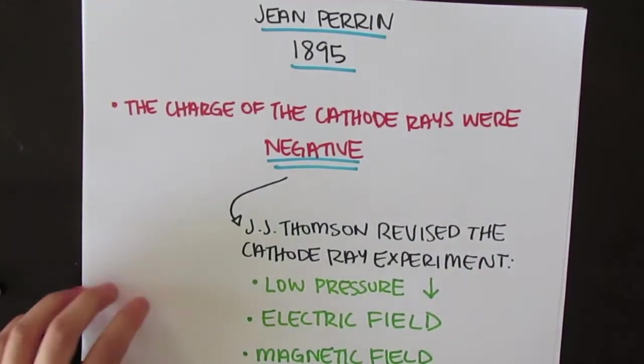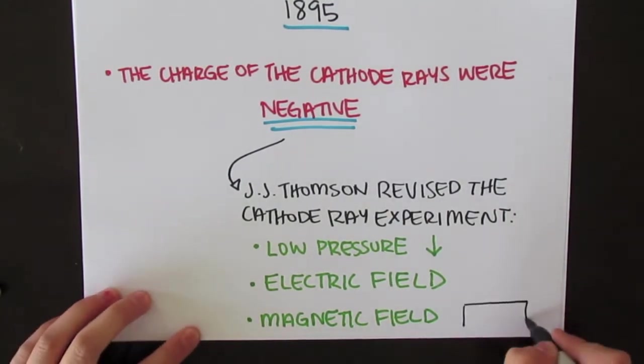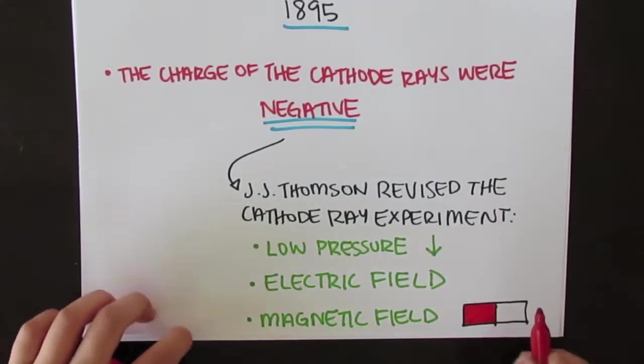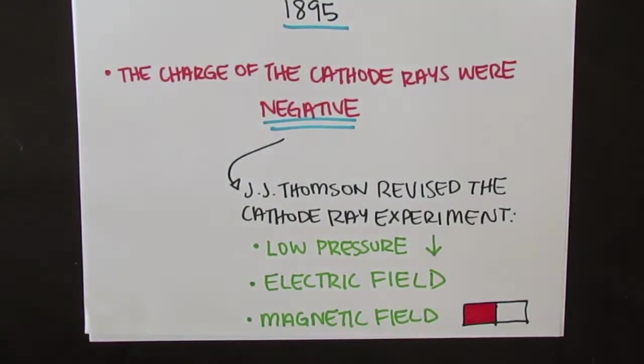No one before could deflect the negatively charged cathode ray, even though the scientists knew from Faraday that magnetic and electric fields could deflect electrically charged particles. He hypothesized that the cathode ray ionized the air, shielding it from the electric fields.